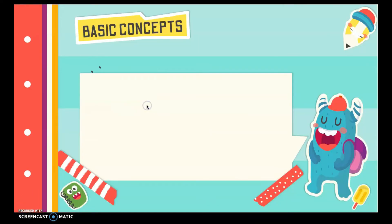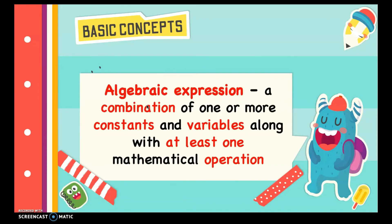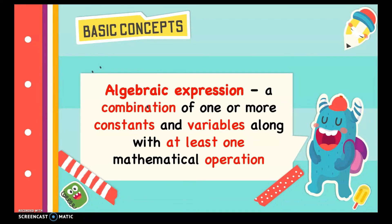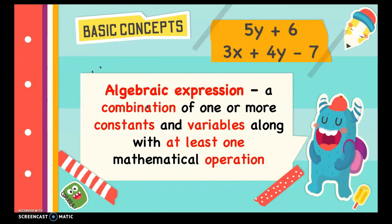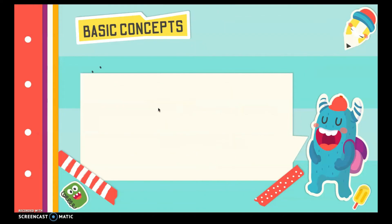Another key concept is algebraic expression. It is a combination of one or more constants and variables along with at least one mathematical operation. Examples include 5y + 6 and 3x + 4y minus 7.